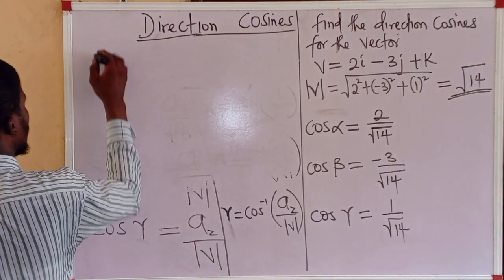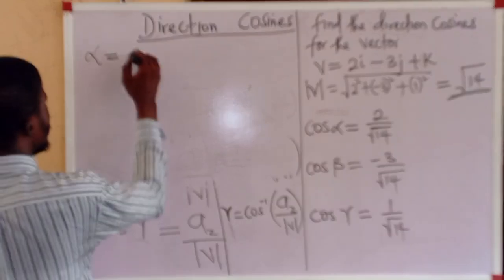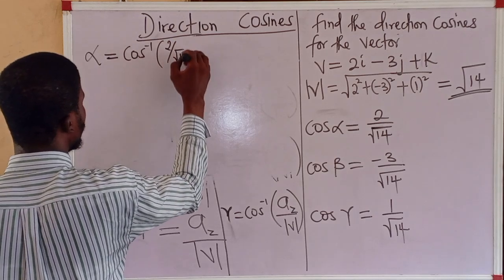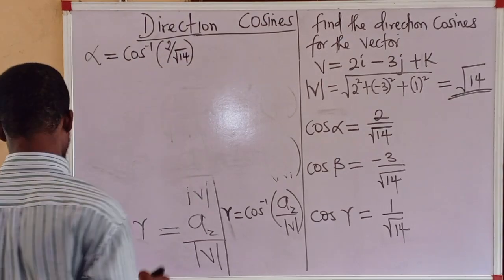We can decide to break them down to obtain the decimal numbers. Let's leave it this way. We can determine the direction angles now. Alpha will be the cos inverse of 2 upon the square root of 14.